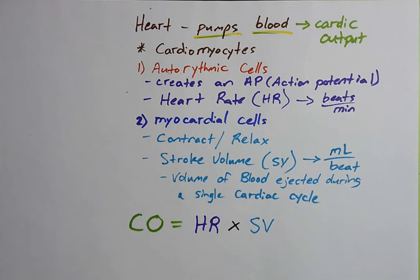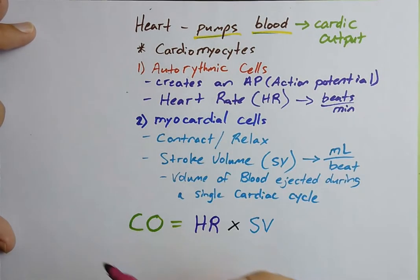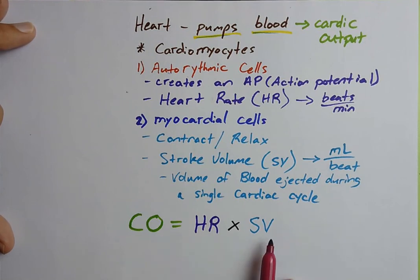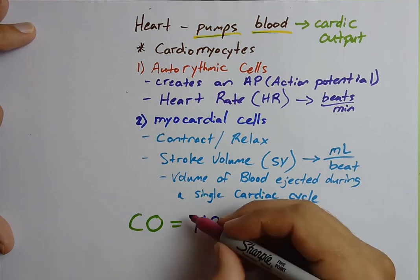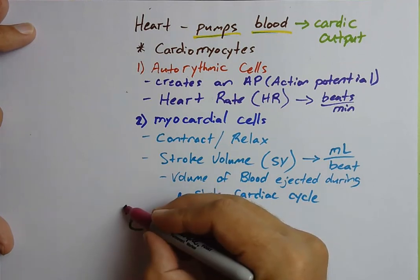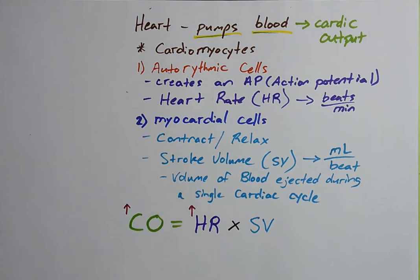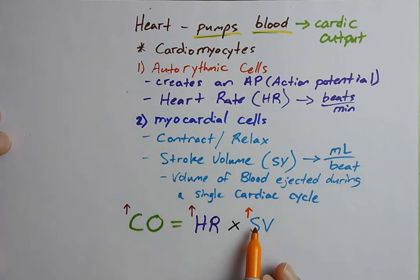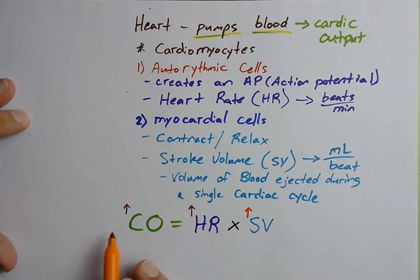Let's put this into perspective. Say a patient needs to get more blood out of their heart. What two variables control how much blood is pumped from the heart? Heart rate and stroke volume. What would happen to cardiac output if heart rate increased? As heart rate increases, cardiac output increases with it. What if stroke volume increased — more blood ejected per beat? As stroke volume increases, the overall cardiac output increases as well.